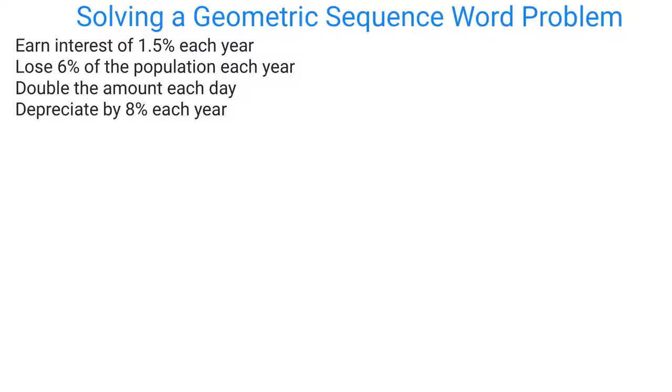It's important to be able to turn these percents into multipliers. There's a separate video on how to do that. But this multiplier, since you're earning interest, would be 1.015. If you're losing 6%, then you're multiplying by 0.94, because it's 6% less than 100%.